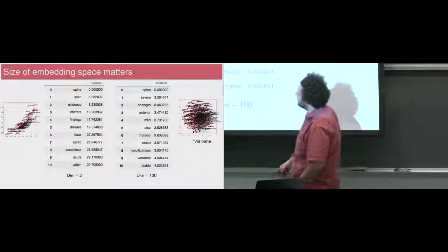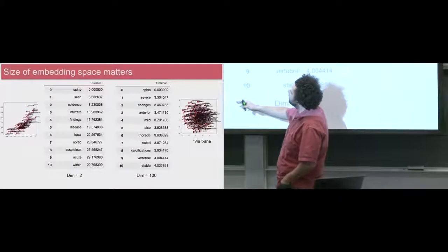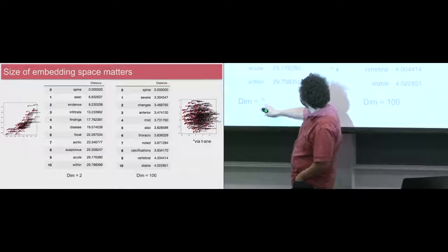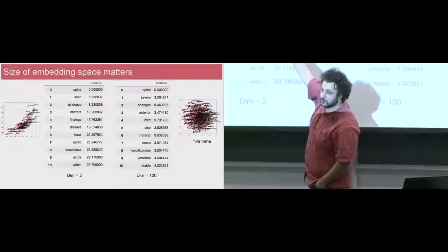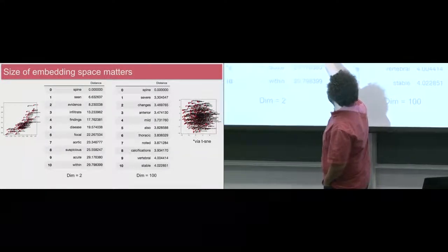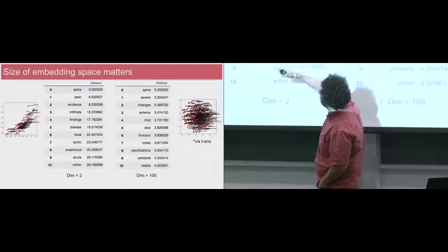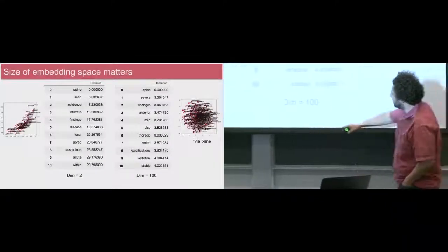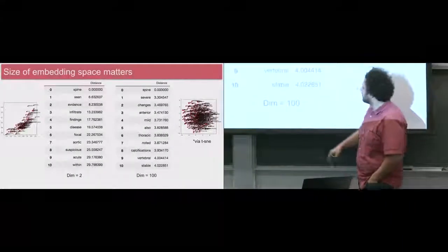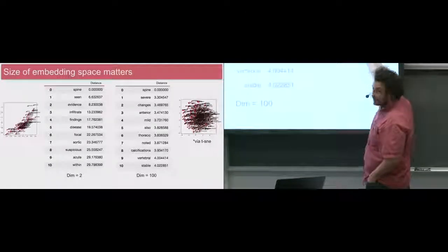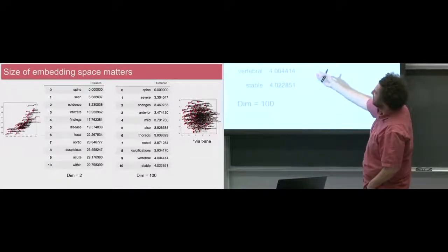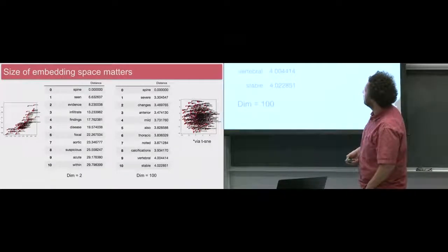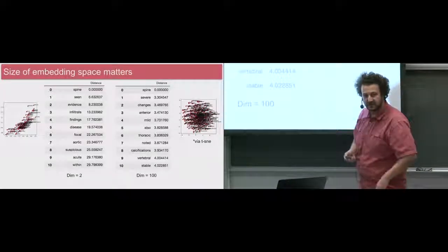Some examples: if we train on the radiology data using a two-dimensional embedding, we'll get results for the word 'spleen' such as scene, evidence, and infiltrate. If we take a dimensionality of 100 at that latent space, we can visualize the space with t-SNE and may see more insightful embeddings, although it's somewhat unclear what the core difference is between these models.